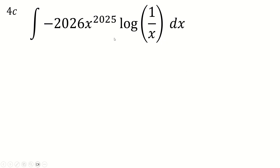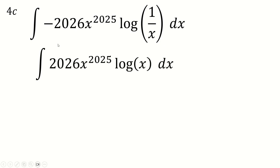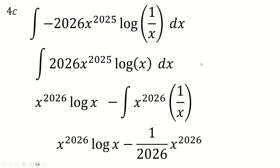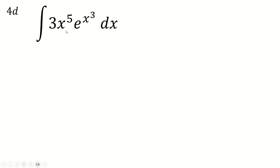This is integration by parts, but think carefully about grouping. The x to the minus one can helpfully be written as 1 over x, which turns it into a log x term. We integrate x to the 2025 (the 2026 exponent is convenient here), getting x to the 2026 over 2026, and leave the log term alone, differentiating it to get 1 over x. Then the remaining integral of x to the 2025 gives x to the 2026 over 2026 divided by 2026, completing the answer.